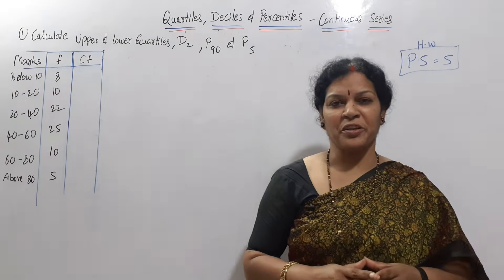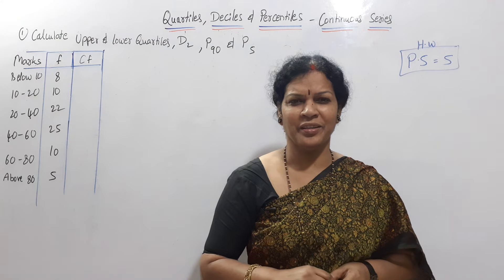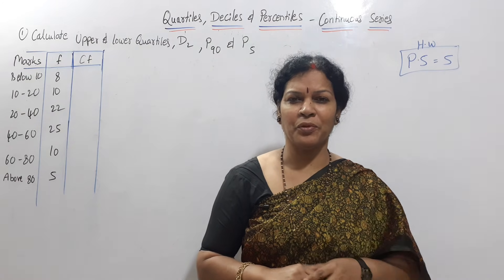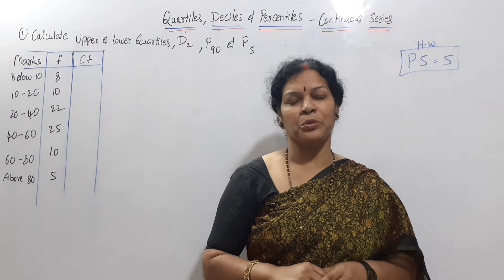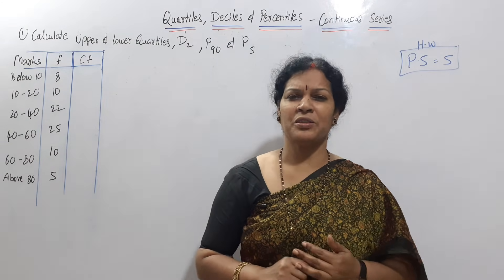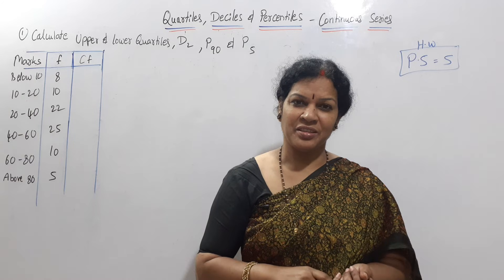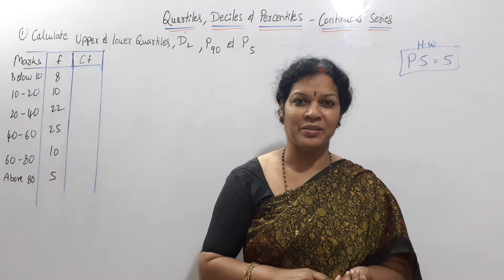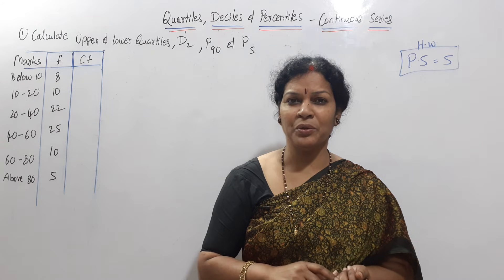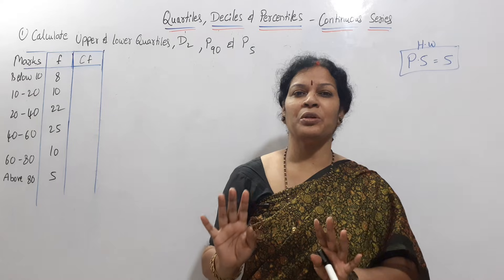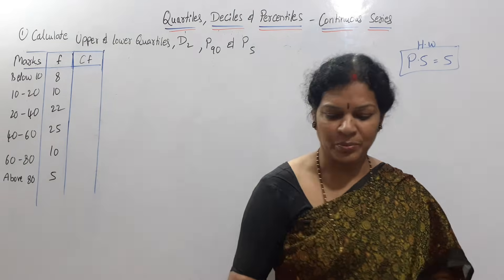Hello dear students, welcome to Devika's Commerce and Management Academy. Today we'll see quartiles, deciles, and percentiles in continuous series. For individual and discrete series, one formula is used: for Q1, size of (n+1)/4th item. The same formula applies for percentiles and deciles. But continuous series will have two formulas — if it is median, size of n/2th item, not n+1. The second formula is L plus (n/2 minus CF) by F into I. The same thing we are going to apply for quartiles, deciles, and percentiles.